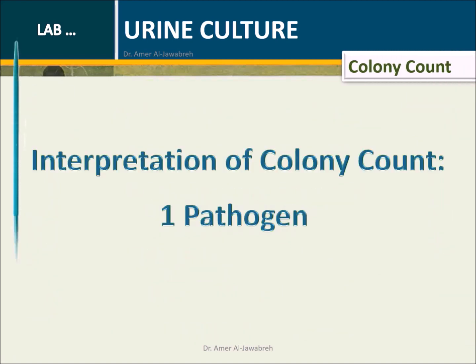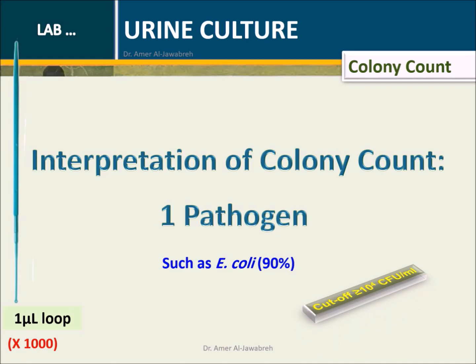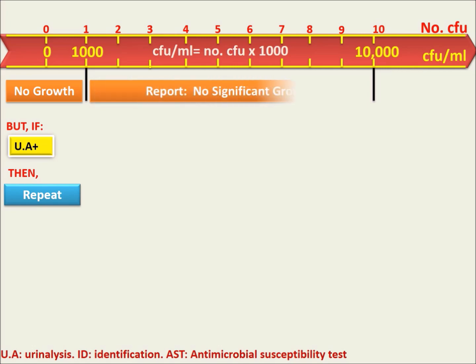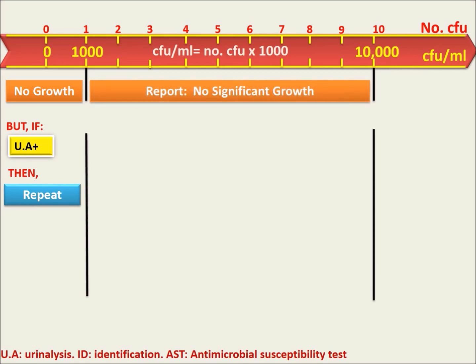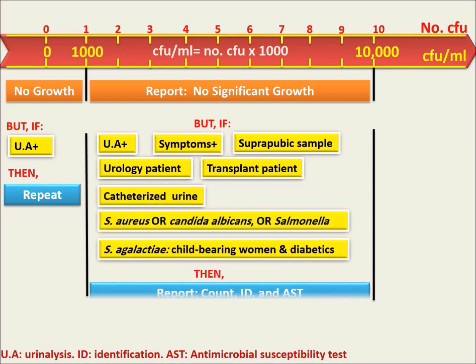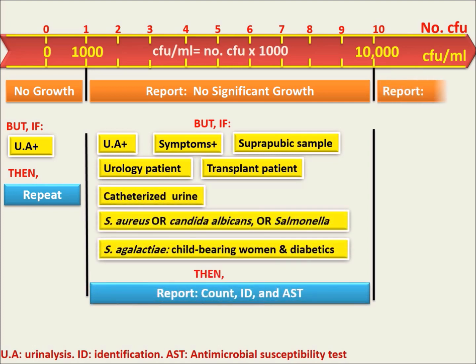Colony count — interpretation for one pathogen, such as E. coli (90% of cases). If the plate has no colonies, report no growth; but if urinalysis is positive, repeat. If the plate has 1 to 9 colonies, report no significant growth; but if one of the yellow box conditions appears, report count, ID, and AST. If the plate has 10 or more colonies, report count, ID, and AST.